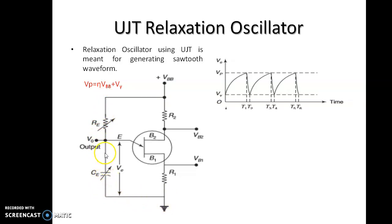The inclusion of the external resistance R2 and R1 in series with B2 and B1 provides spike waveforms. When the UJT fires, the sudden surge of current through B1 causes a voltage drop across R1 which provides positive going spikes.